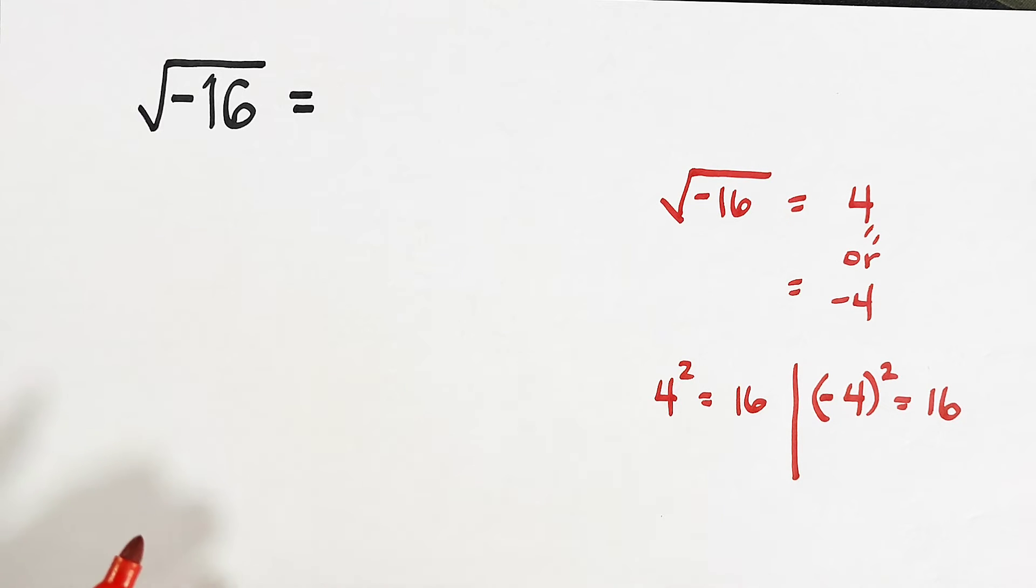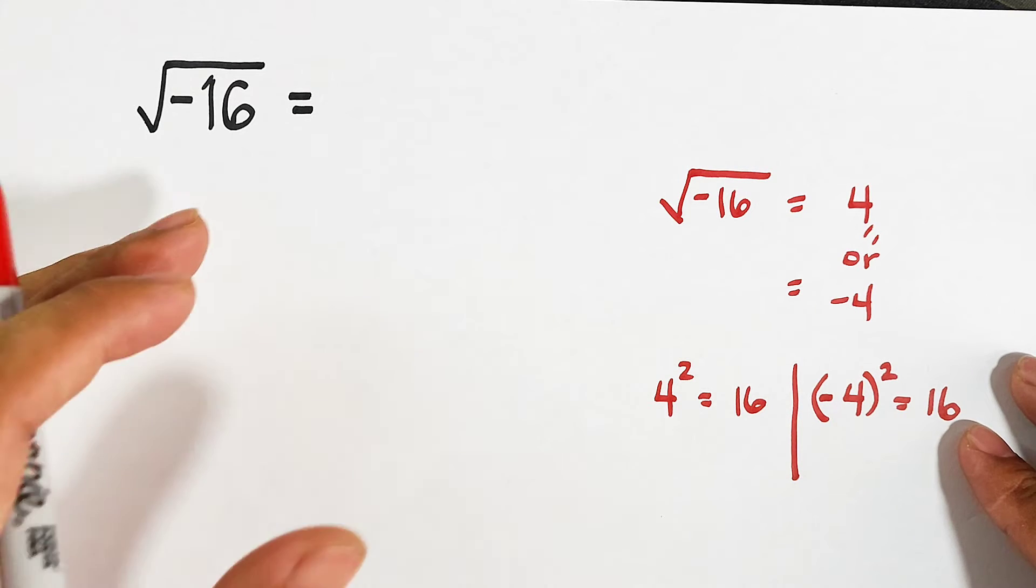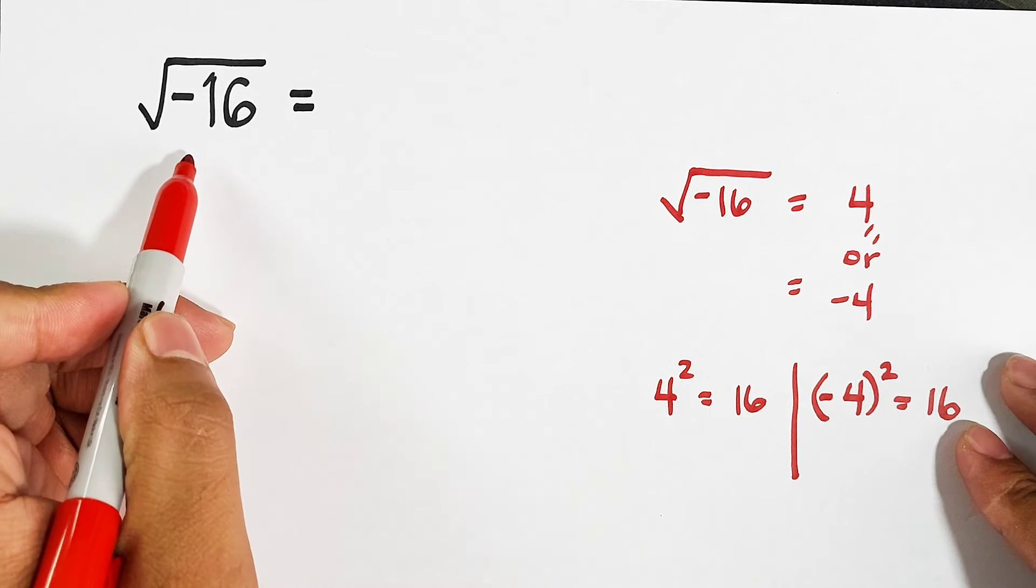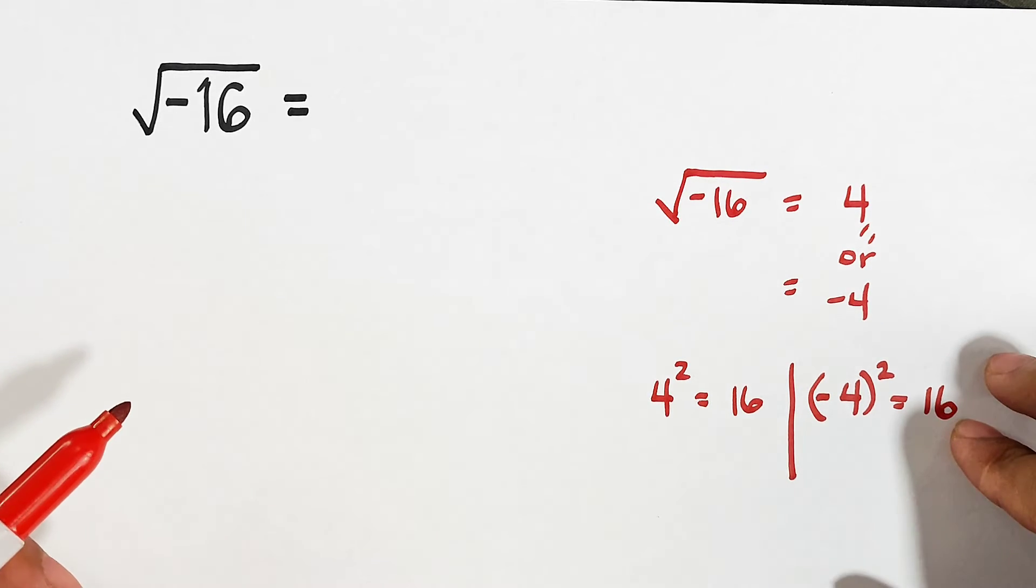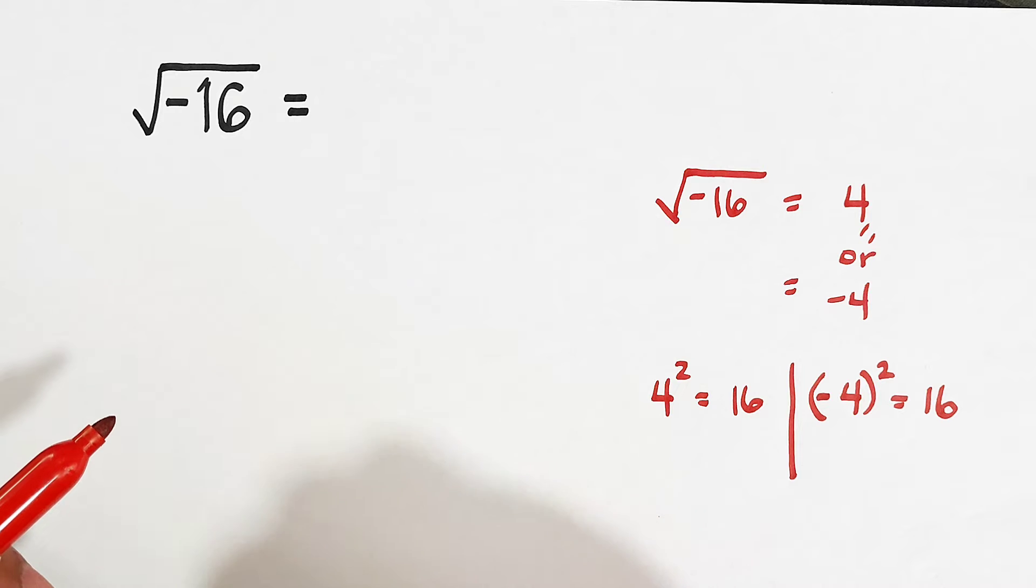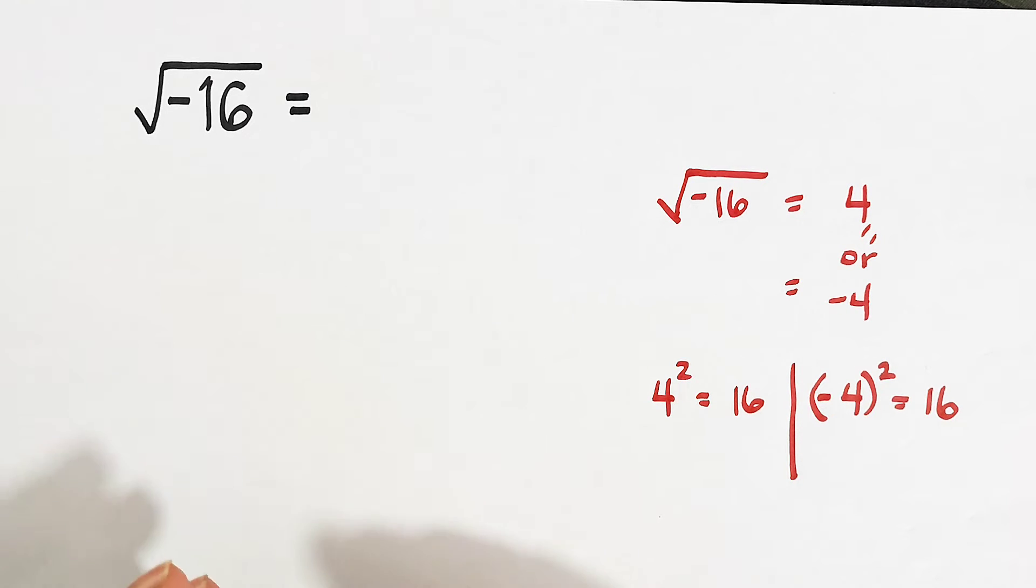So here's the question. How are we going to simplify this kind of radical in which the radicand or the number inside the radical is negative? So let me give this to you. The square root of a negative number does not exist in real mathematics. So here, in this case,